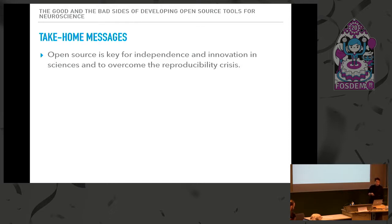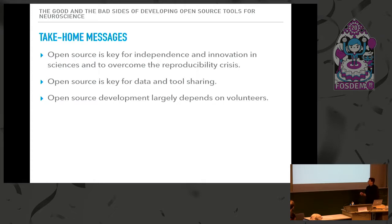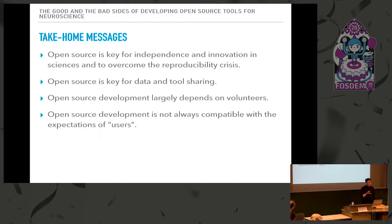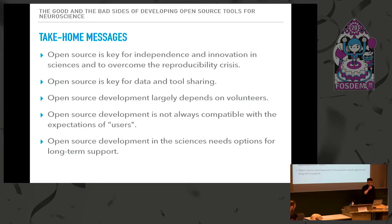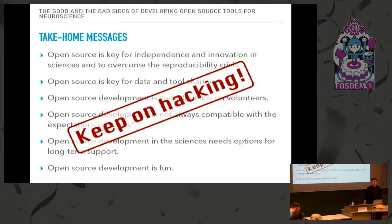My take-home message is: open source, in my understanding, is the key for independence and innovation in sciences and to eventually overcome the reproducibility crisis. Open source is also the key for data and tool sharing. One drawback: open source development largely depends on volunteers doing it in their free time, and the way open source development works does not always work with scientists who just want to use it. My claim is we would need long-term support for open source tools in the sciences. Finally, open source is definitely fun — keep on hacking. Thank you.